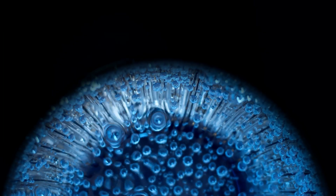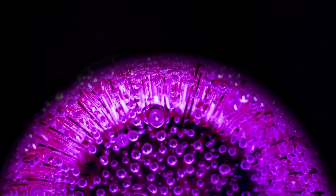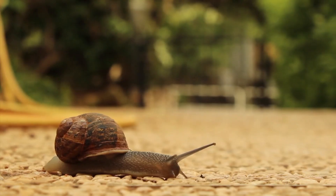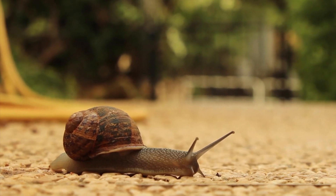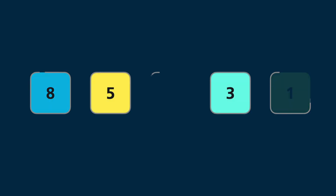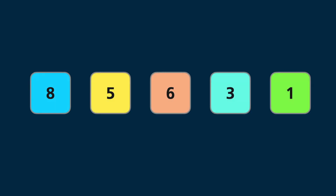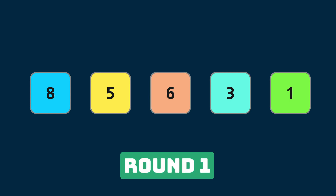Bubble sort algorithm is the easiest sorting algorithm, however, it is the slowest one. Let's have a look at the example where we have to sort 5 elements. In bubble sort algorithm there are rounds.